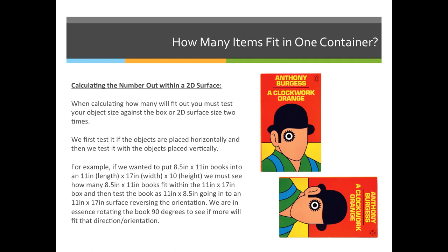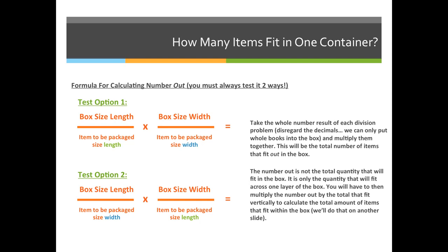We're going to refer to it as the option one, option two method. We're in essence just turning the book 90 degrees to see if we can fit more books. Let's look at that visually. When you write this down on your cheat sheet for your exam, I would write what's on this slide right here.